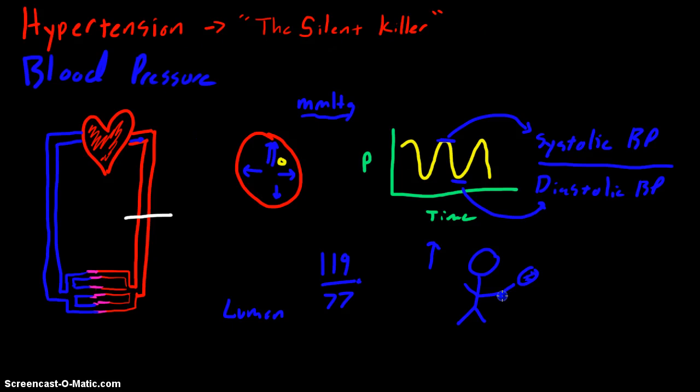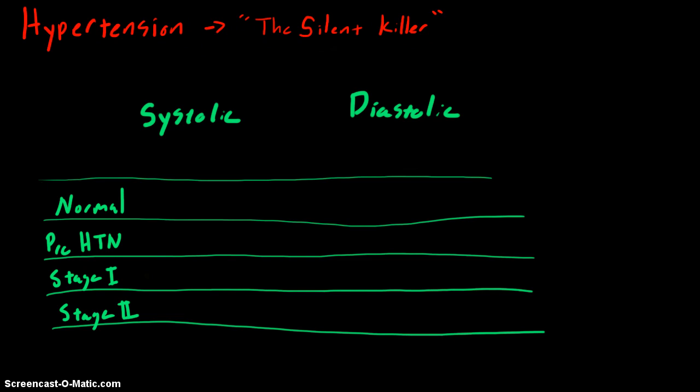With this in mind, let's look at how to diagnose and classify blood pressure and hypertension. In order to diagnose somebody with hypertension, it needs to be over time. We usually say that there needs to be four weeks between blood pressure measurements in order to say someone has hypertension.